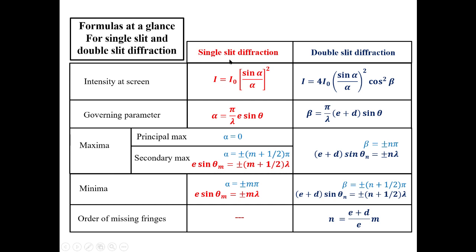The maxima due to single slit are of two types. One is the principal maxima at the center where α = 0 or θ = 0. Secondary maxima are given by α = ±(m + ½)π, and the condition becomes E sinθₘ = ±(m + ½)λ. The maxima due to double slit diffraction are given by (E + D) sinθₙ = nλ. The order of missing fringes in double slit diffraction is given by n = [(E + D) / E] × m.